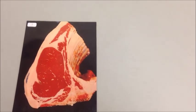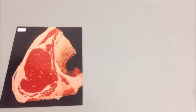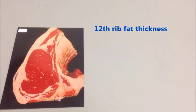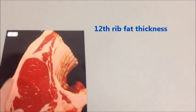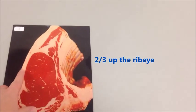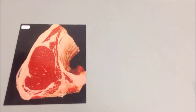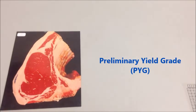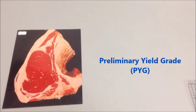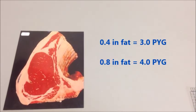The first measurement you need when calculating yield grade is the fat thickness at the 12th rib, right here. You measure it about two-thirds to three-quarters of the way up the ribeye from the backbone. You can measure it with a ruler in tenths of an inch and then convert those tenths of an inch to a preliminary yield grade, or PYG. If you have no fat at all on the ribeye, you start out at a 2.0 PYG.